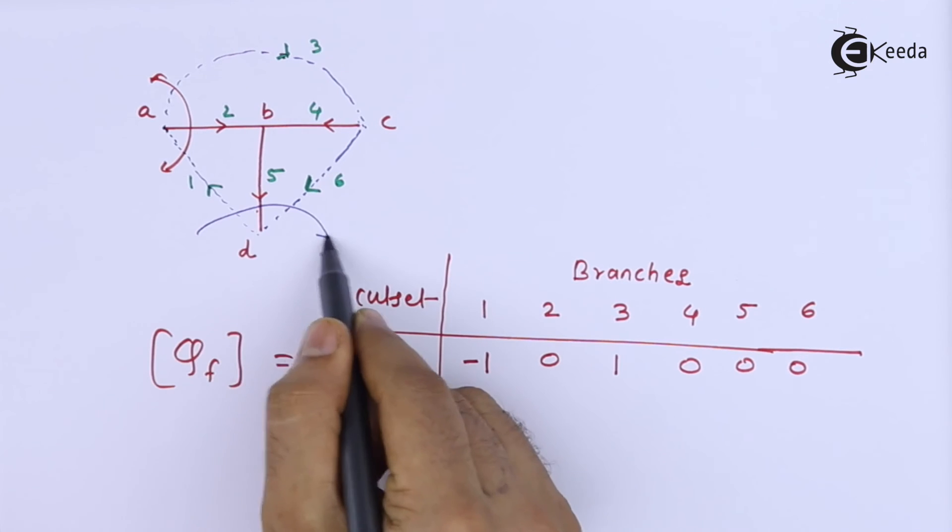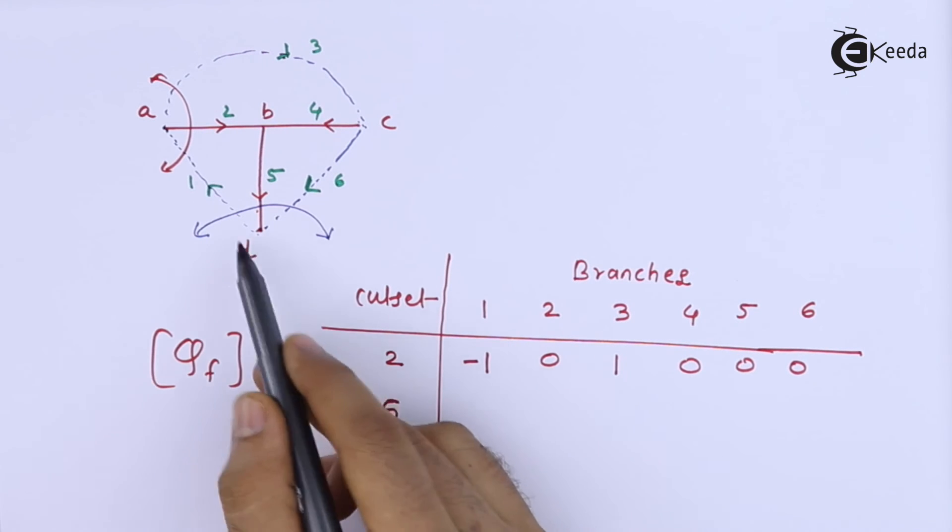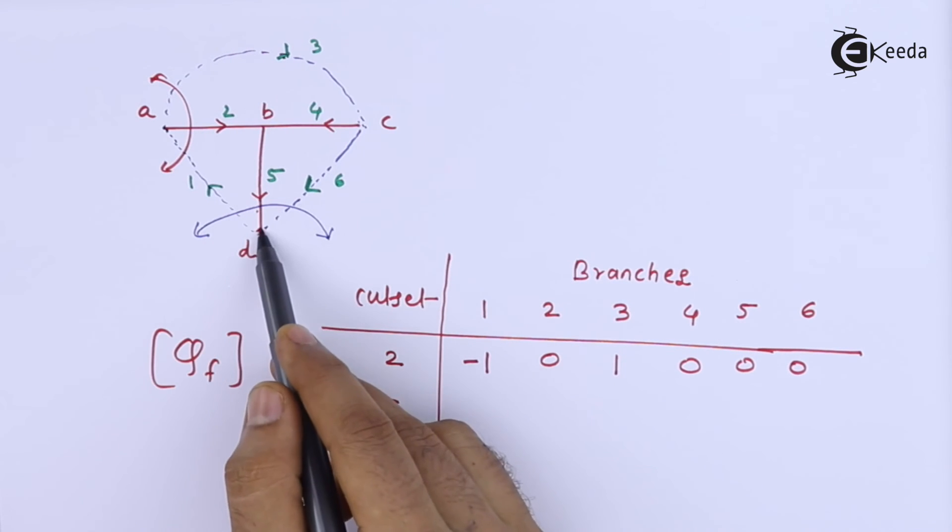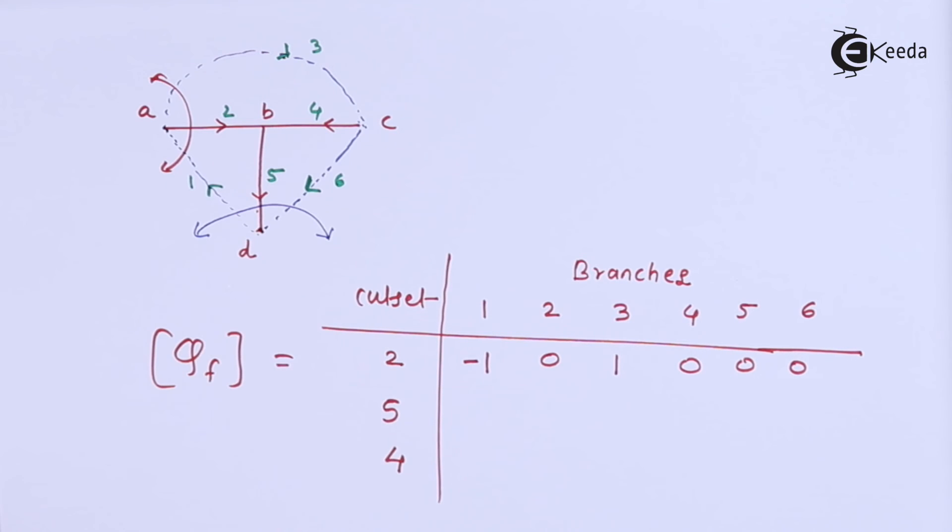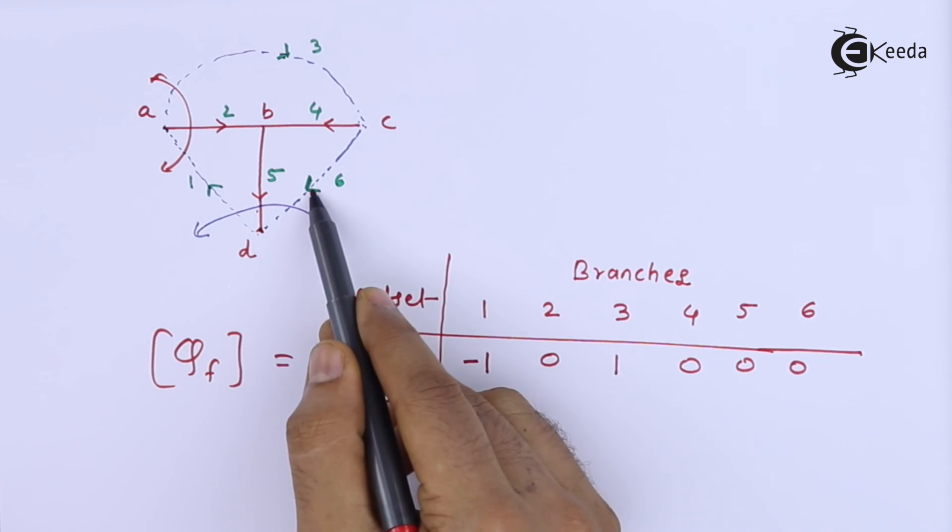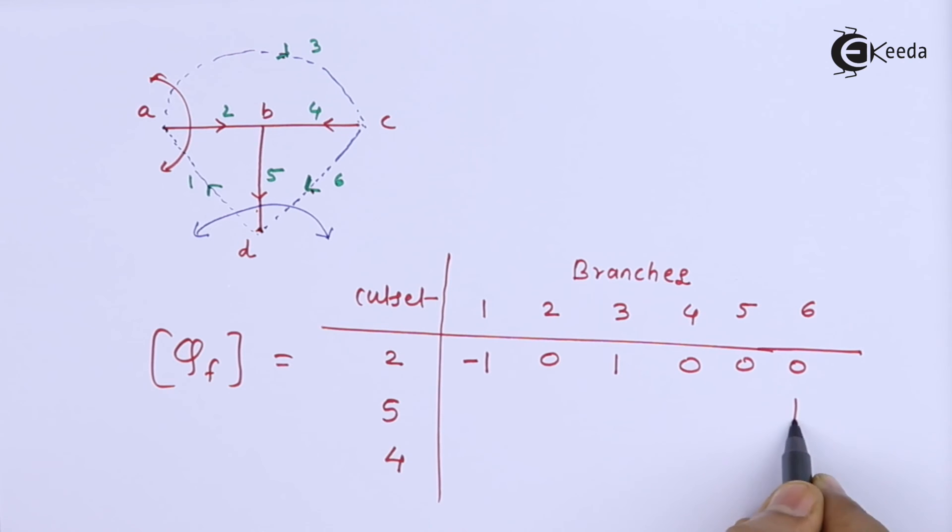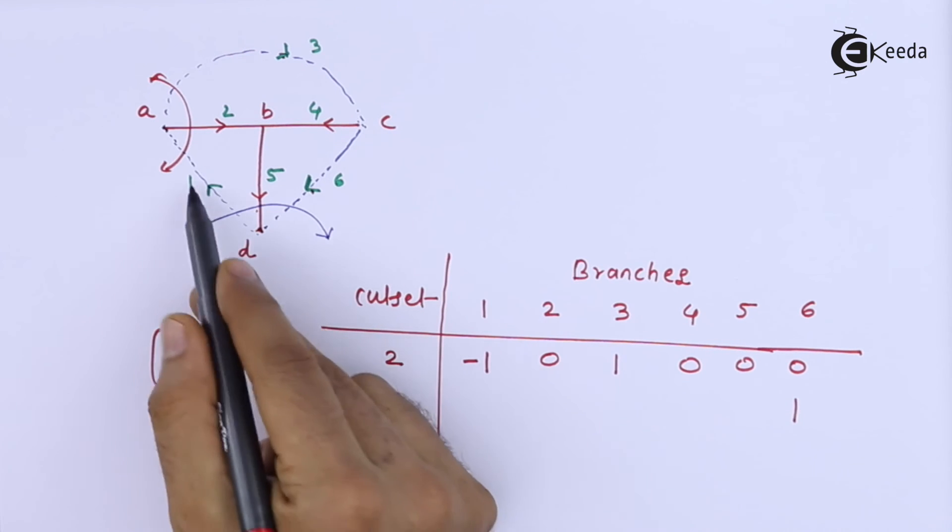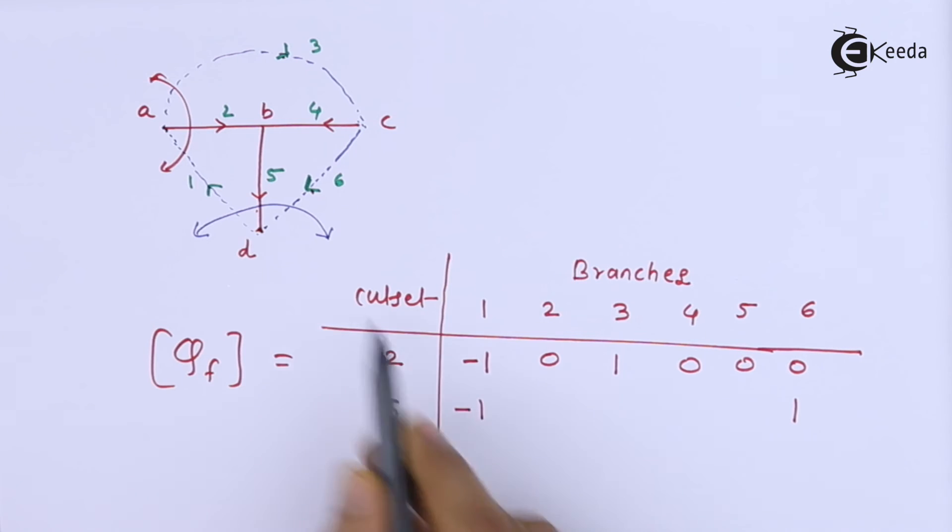Now I am going to talk about cut set 5. For this cut set 5, coming towards this node should be considered as positive. So 6 is coming, so it is considered as positive, so 6 should be 1. Then 1 is going away, so it is negative, and 5 already, it will be positive, rest will be 0.